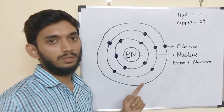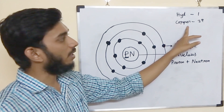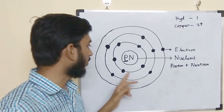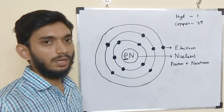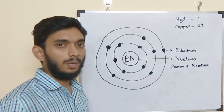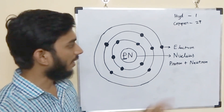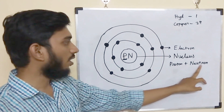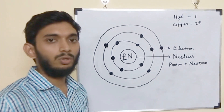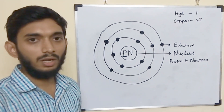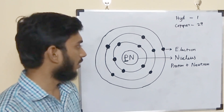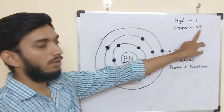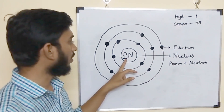So the proton count is 1 for hydrogen. If we look at copper, it has an atomic number of 29. The atomic number tells us the number of protons in the nucleus. The electron carries negative energy, while the neutron is in a neutral state — neither positive nor negative. Copper has atomic number 29, so it has 29 protons.